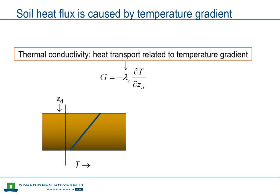Heat transport in the soil occurs by conduction. When there is a temperature gradient, this will lead to heat transport. The temperature gradient and the heat flux are related through the thermal conductivity. This thermal conductivity is the first soil thermal property that we encounter, but more will follow.